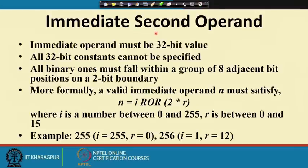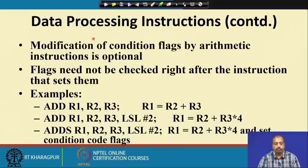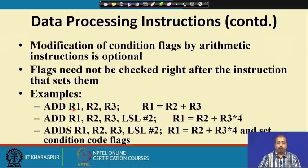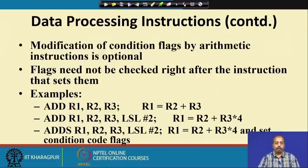The modification of the condition flags by arithmetic instructions is optional. The ADD instruction has two variants: ADD and ADDs. The instruction ADD R1, R2, R3 will compute R1 = R2 + R3 — R2 and R3 are added and the result comes to R1. After the opcode, we have the destination, then the first operand, then the second operand. All instructions follow this format.